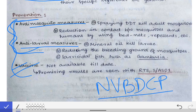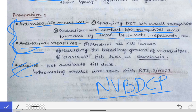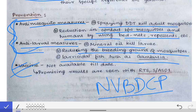Anti-mosquito measures include spraying DDT to kill adult mosquitoes and reducing human-mosquito contact using bed nets and repellents. Anti-larval measures include putting mineral oil on water surfaces, reducing mosquito breeding grounds by preventing stagnation of water, and using larvicidal fish like Gambusia, which eat mosquito larvae. These methods decrease the mosquito population and thus reduce the five vector-borne diseases.